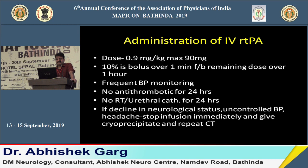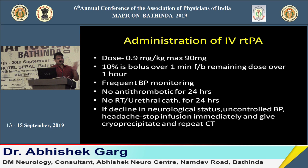IV tPA administration: total dose is 0.9 mg/kg, maximum 90 mg. Ten percent is given as a bolus and the remaining dose over one hour. During thrombolysis, BP is closely monitored and kept below 185/110. Antithrombotics — aspirin and clopidogrel — are withheld for the next 24 hours. Do not catheterize the patient for 24 hours after thrombolysis.